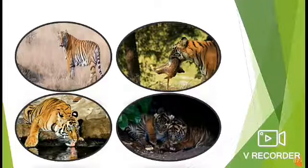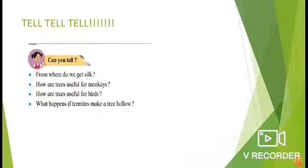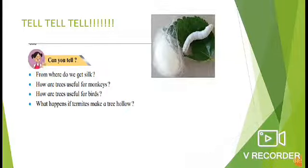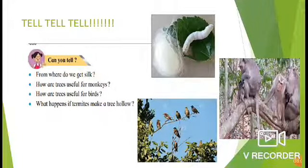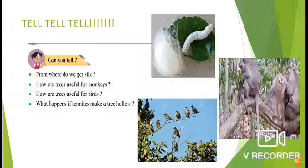Now, can you tell — from where do we get silk? Yes, we get silk from silkworm. How are trees useful for monkeys and birds? Monkeys and birds live on trees, and birds build their nests there. What happens if termites make a tree hollow? Termites are small insects that attack the tree, making it hollow, which stops the growth of the tree and finally the tree dies.